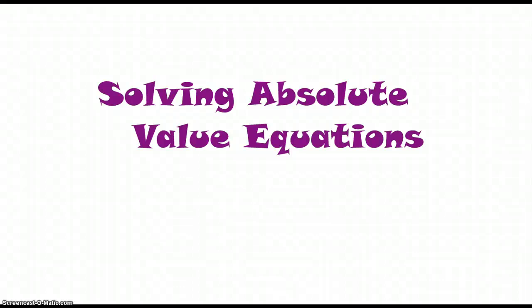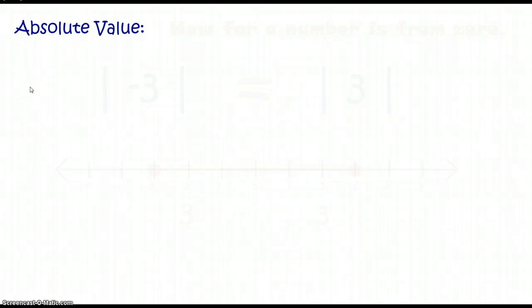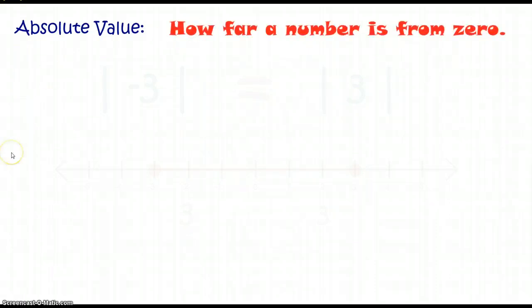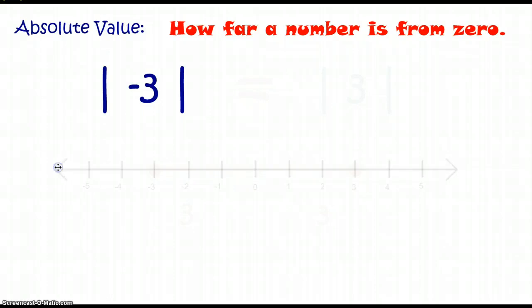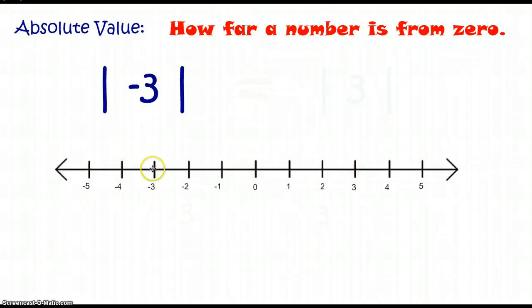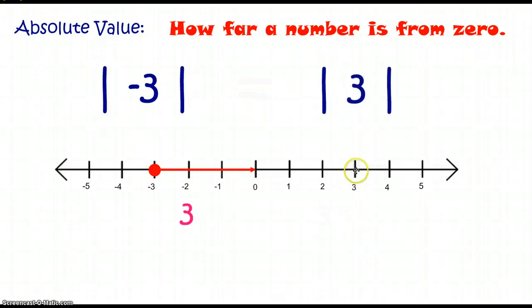Today we're going to learn to solve absolute value equations. Absolute value is how far a number is from zero. The absolute value symbol is two vertical lines with a number in between. The absolute value of negative 3 is asking how far negative 3 is from zero — that's three spaces. Positive 3 is also three spaces from zero, which means the absolute value of negative 3 and 3 are equal.